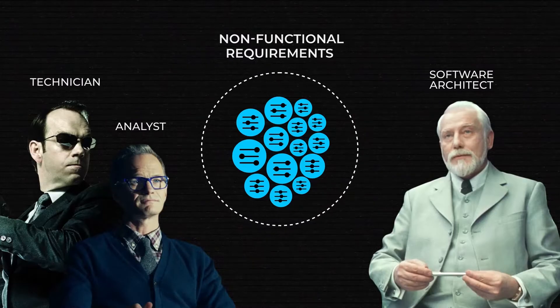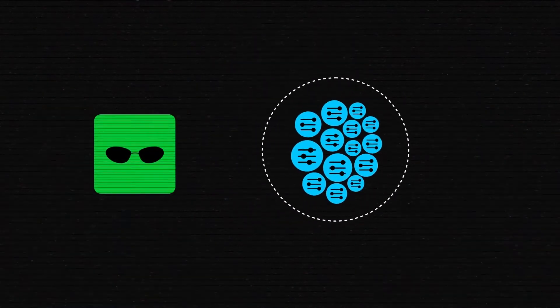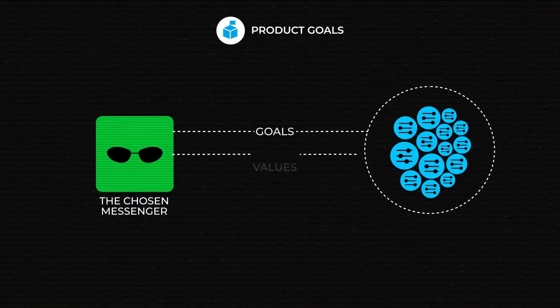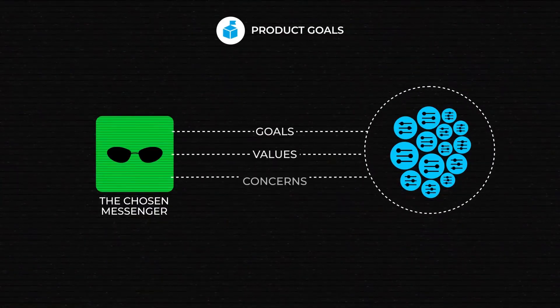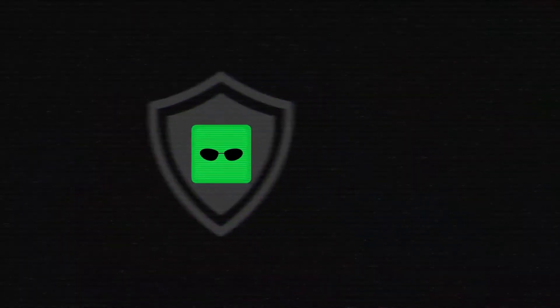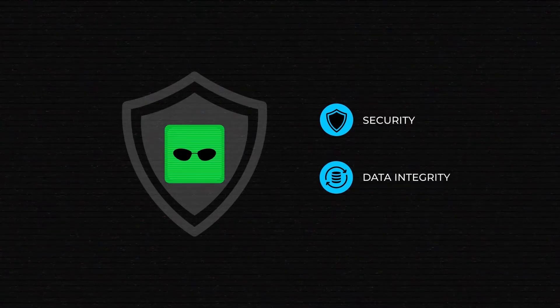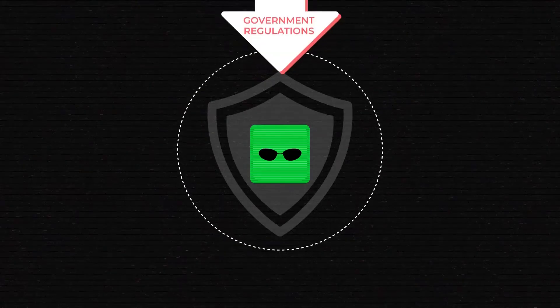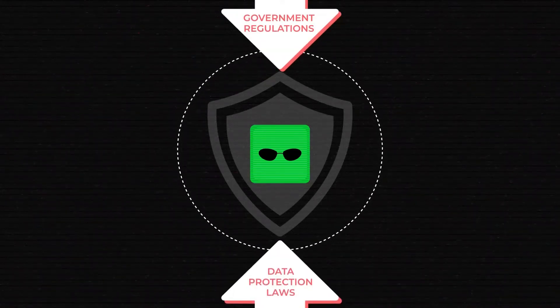How do we run research to find them? First and foremost, non-functional requirements can be derived from the product goals, values, and concerns. For instance, we want to build the safest messenger in the world, so the product specifications will obviously include security and data integrity capabilities. But they will also entail some constraints, as long as government regulations and data protection laws like GDPR have an impact.